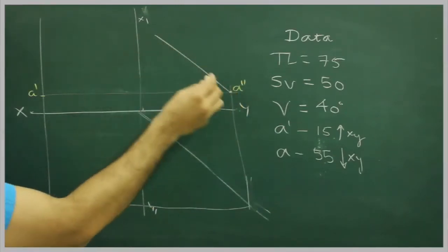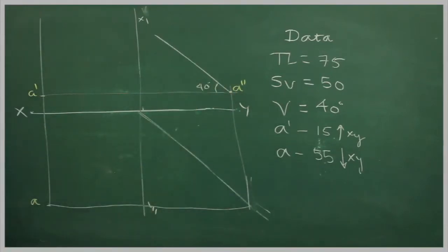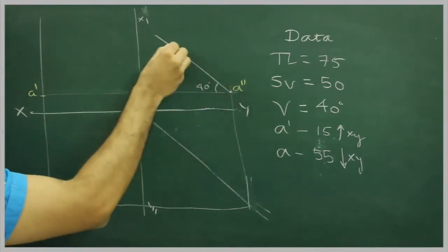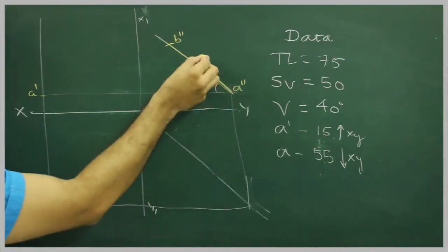So that we will draw, that is 40 degree, and on that we can cut side view A dash that is 50. So I will cut B double dash, that is 50.